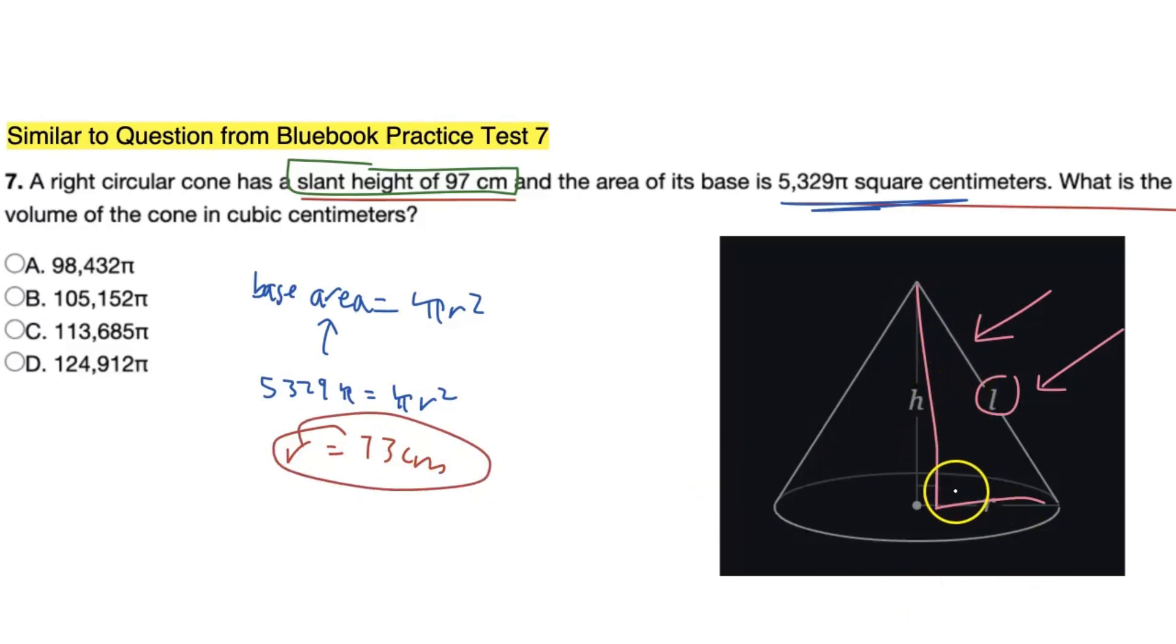So what is the base area? Well, it's given right here as 5,329π square centimeters. So 5,329π equals πr². So now how do we find r? Well, we just isolate and solve for r. So in this case, r will be equivalent to 73 centimeters. Now we can actually utilize this right triangle relationship.